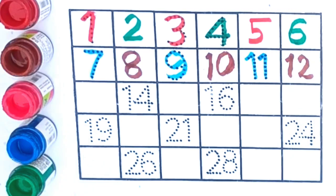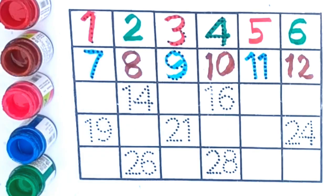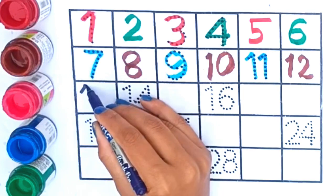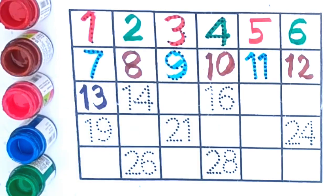12, 12, yeh hai bacchho. 13. Yeh hai 1 and 3, 13. 14, yeh hai 14.